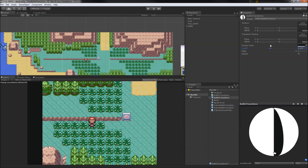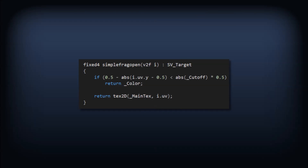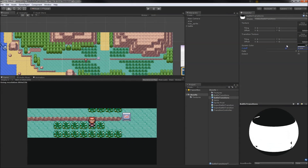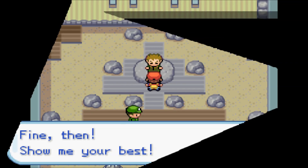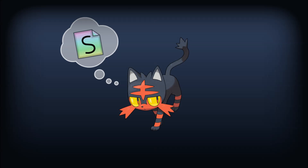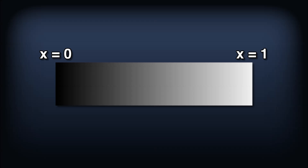It's a nice and simple transition, and we could maybe write another version that compares y positions to create the opening-up-from-center transition, but creating that angular pattern seen in the battle against Brock would be pretty unwieldy. So we need another way of determining when a pixel should be cut off other than its x-y position. Let's try a different strategy: instead of comparing the x-position of the pixel, we'll encode when each pixel should be cut off in a texture. A gradient that goes from black to white as we go from left to right will basically encode the same values as our UV x-position.